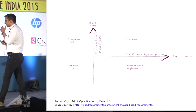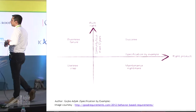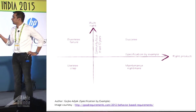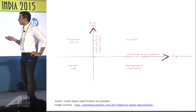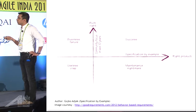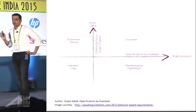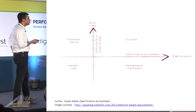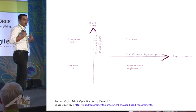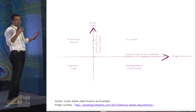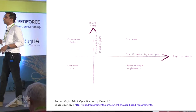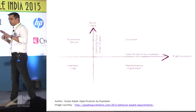Let's look at this magic quadrant, created by Gojko Adzic in his famous book, Specification by Example. Here he has tried to show the relationship between what is built right and whether the product is right in itself. Clearly, if the product is neither right nor built rightly, it ends up as useless crap — no one wants that. If the product is built right but the product itself is not right, it's going to lead to business failure — a sheer waste of money.